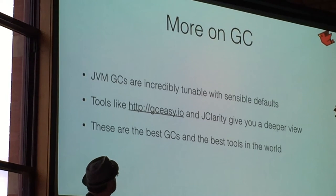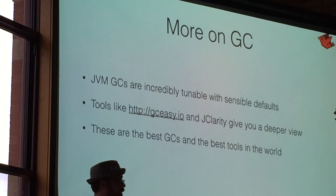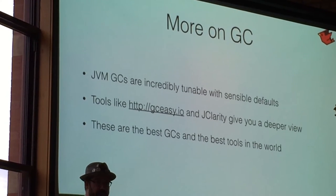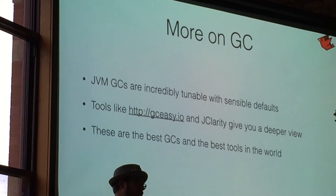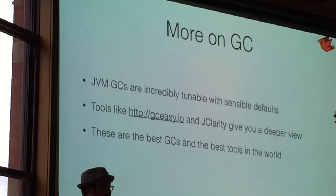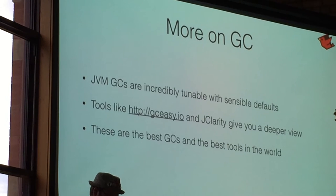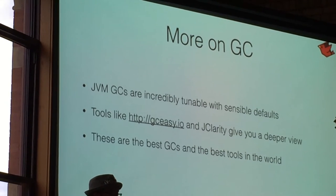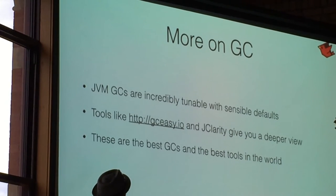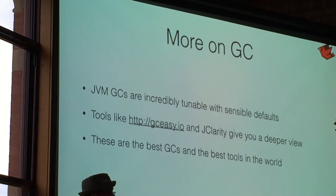So I mentioned all the GC stuff. Tons of garbage collection options and tons of tuning options — sometimes a baffling array of tuning options. But having those options there means you can make it run the way you need it to. There are also other tools out there. GC-easy.io — basically you can take garbage collector logs from any JVM, dump them onto this website, and it will say here's some problems — you're allocating too many objects in this generation, you've got a steady leak. Jclarity gives a little bit deeper view. These are the best garbage collectors in the world and the best tools for a VM in the world. And you can have them all using JRuby too.